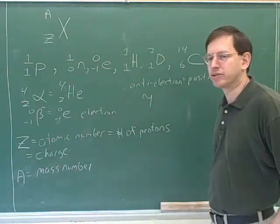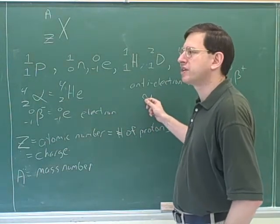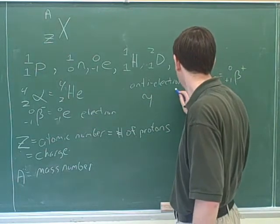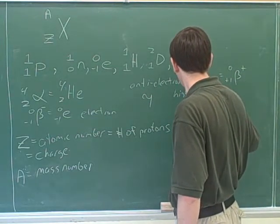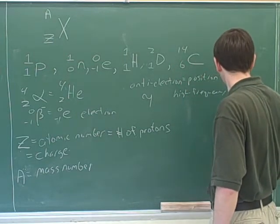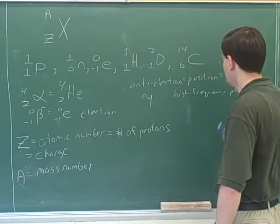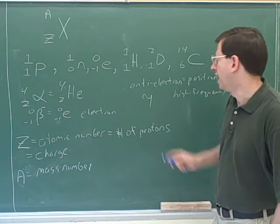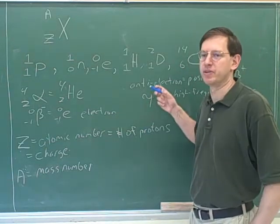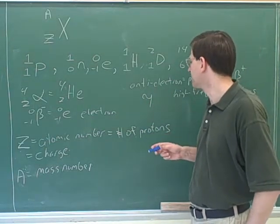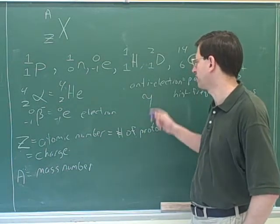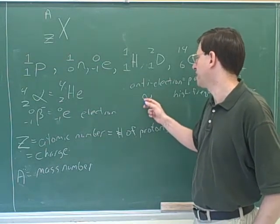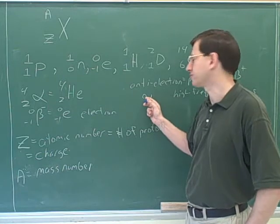Then we have gamma particles. Gamma particles are high-frequency photons of light. Photons are the particle interpretation of electromagnetic radiation, so a gamma particle can also be called a gamma wave. Because of wave-particle duality, sometimes it helps to think of these as particles and sometimes as waves. They are part of the same electromagnetic spectrum as radio waves, visible light, and ultraviolet light.